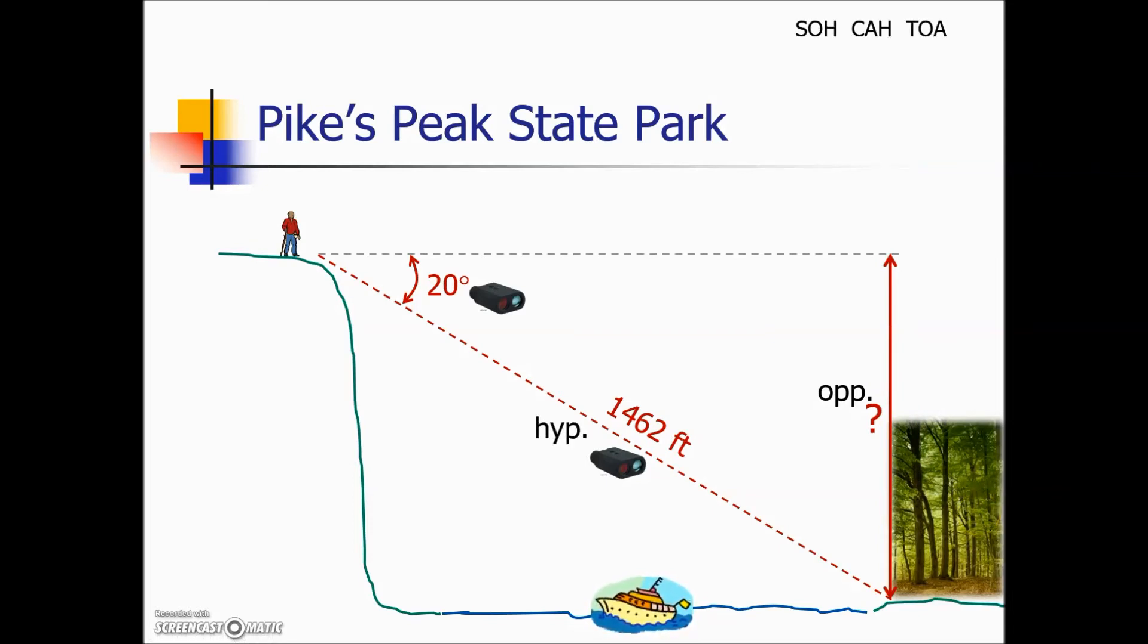We have our hypotenuse the distance to the opposite shore and we're set to solve this triangle. Which version of our trig ratio will we use? We're looking for opposite and we have hypotenuse so we will use the sine ratio. Replacing the variables with the information sine of the angle which is 20 degrees is equal to the opposite we don't know over the hypotenuse. When the variable is in the numerator of the ratio we can multiply both sides by 1462 the value in the denominator and solve the problem. The resulting answer is 500 feet.